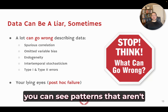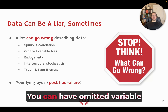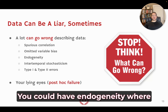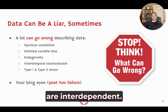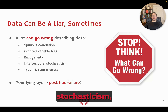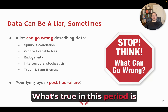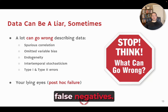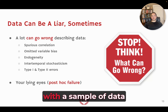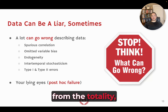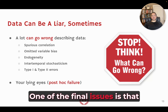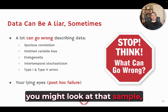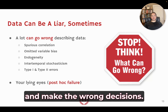With spurious correlation, you can see patterns that aren't real. You can have omitted variable bias where the absence of specific metrics misleads you. You could have endogeneity where the metrics you're using are interdependent, or intertemporal stochasticism — meaning patterns change over time and what's true in one period is not true in a future period. And there are the classic type 1 and type 2 errors — false positives and false negatives. Since you're almost certainly dealing with a sample, you might just have a bad sample and act on wrong decisions.